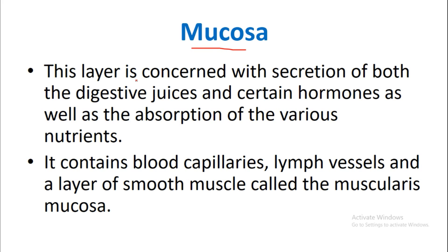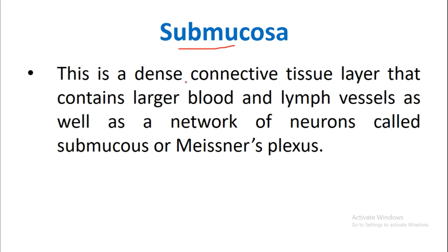The mucosa is concerned with secretion of digestive juices and certain hormones, as well as absorption of various nutrients. It contains blood capillaries, lymph vessels, and a layer of smooth muscle called the muscularis mucosa. The submucosa is a dense connective tissue layer that contains larger blood and lymph vessels, as well as a network of neurons called the submucosal or Meissner's plexus.